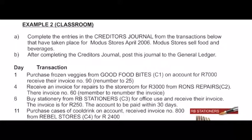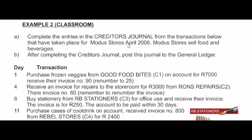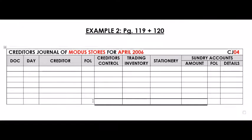Example 2 says: complete the entries in the creditors journal from the transactions below that have taken place for Modus Stores, April 2006. Modus Stores sell food and beverages. First, give your CJ a heading. It's the creditors journal of Modus Stores for April 2006, and because April is the fourth month of the year, it's CJ number 4.